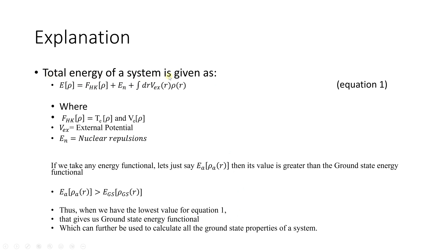Moving on towards the explanation: the total energy of the system is given as E(ρ) = F_HK(ρ) + E_N + the integral dr of V_ext(r)·ρ(r), where ρ represents the electron density. The term F_HK(ρ) is composed of two different terms: T_e, the kinetic energy operator of the electrons, and the potential energy for electron-electron repulsion.